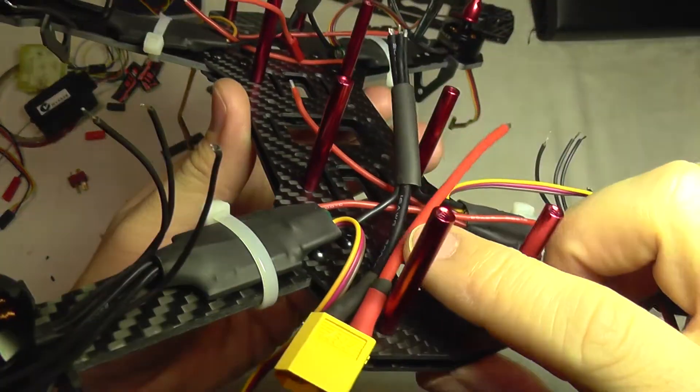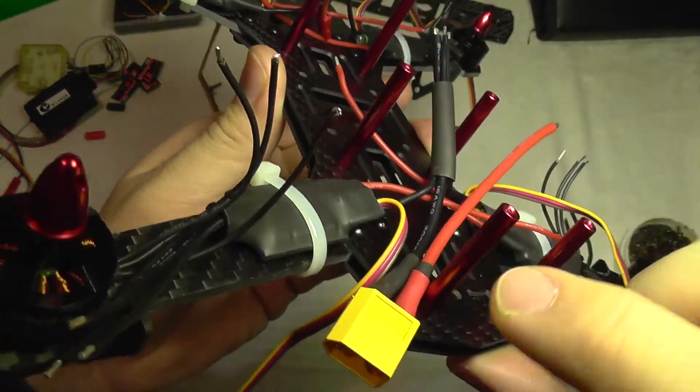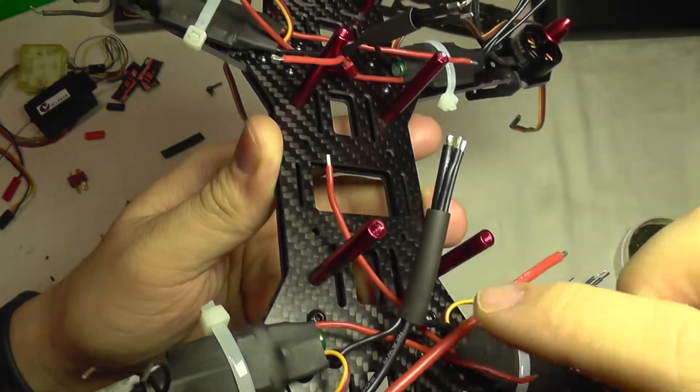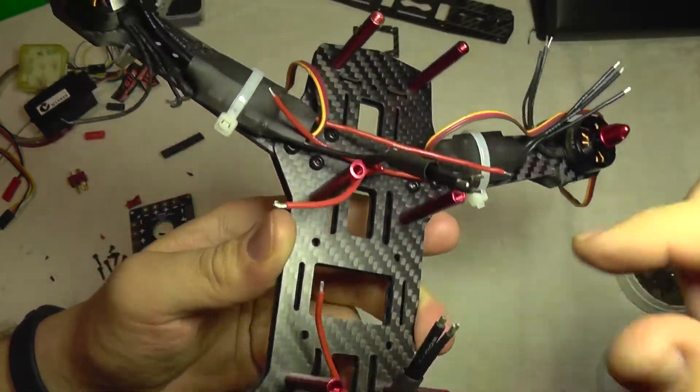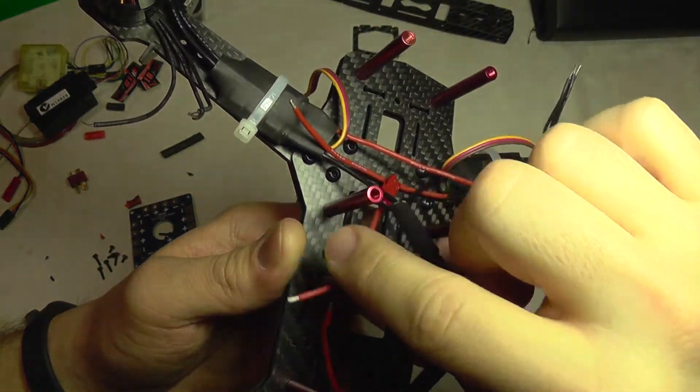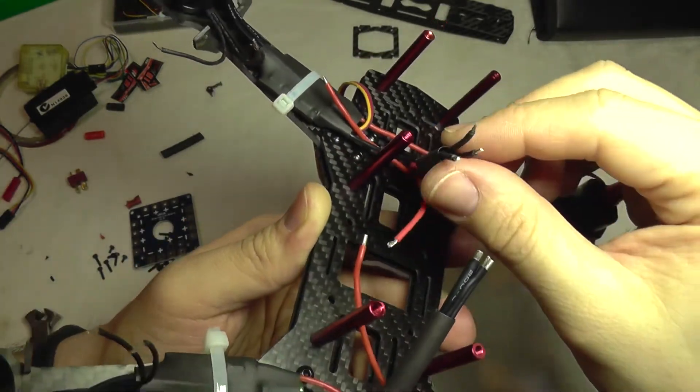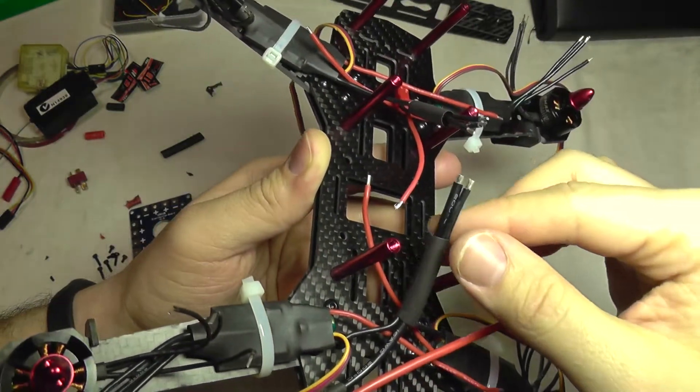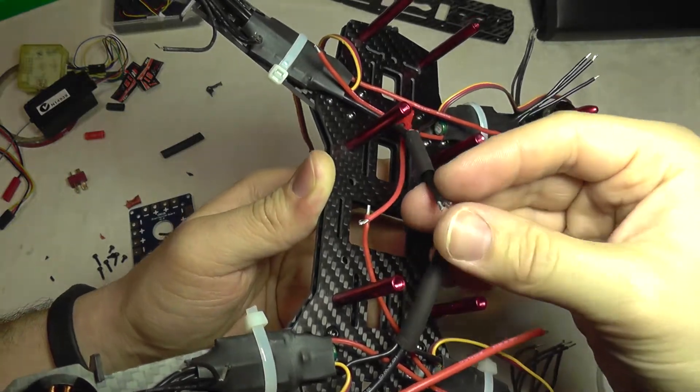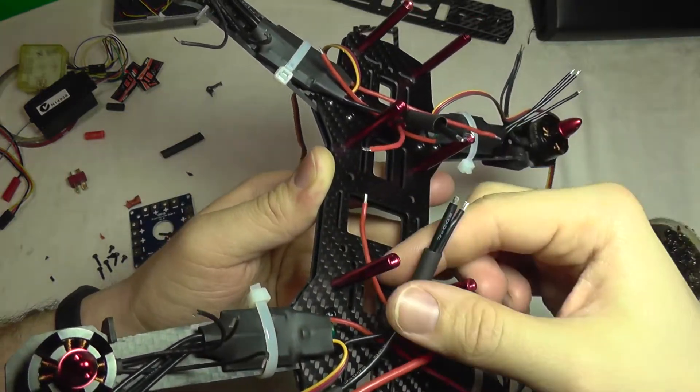I have grouped the negative wires here. You can see the one that comes from the battery, the rear ESCs and the front ESCs, and the FPV power cable. Now I'm going to find the method of soldering them together in line like this and then slipping the heat shrink over them.